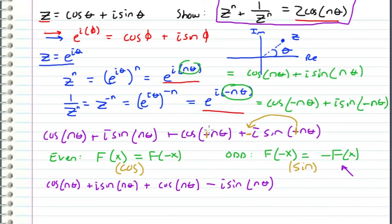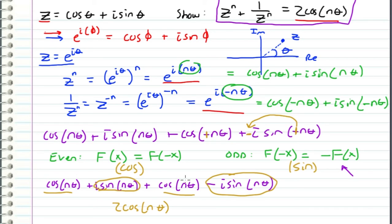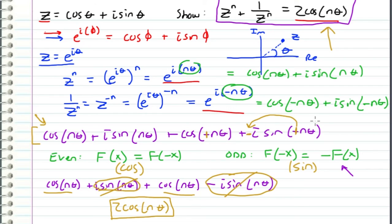Now we can see exactly how this simplifies. Rewriting, we get cosine of n theta plus i sine of n theta plus cosine of n theta minus i sine of n theta. The cosine terms are like terms, so adding those together gives two cosine of n theta. The i sine n theta and negative i sine n theta cancel out, leaving just two cosine of n theta, which is exactly what we wanted to prove. So we have successfully shown that z to the n plus one over z to the n is equal to two cosine of n theta.